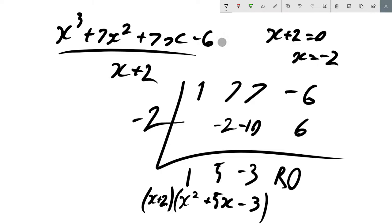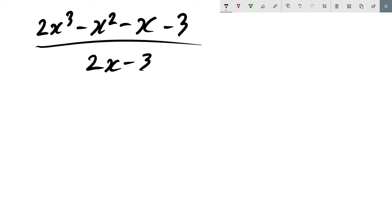I want to do one more example. So we have 2x³ - x² - x - 3 and we're going to divide that by 2x - 3.